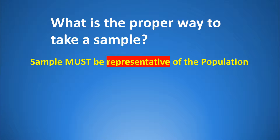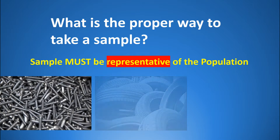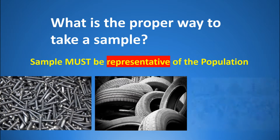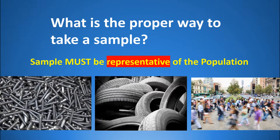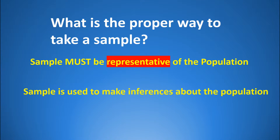The sample you take — whether you're sampling screws, tires, or people — must be representative of the overall population, since you're using it to make inferences about that population.